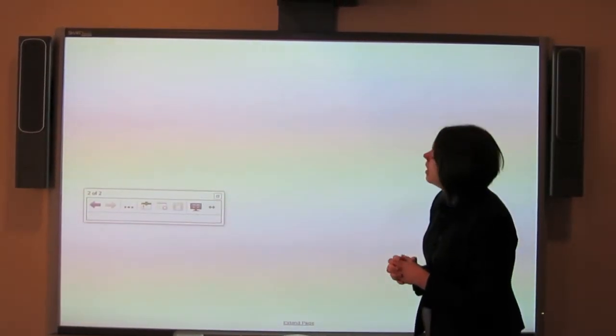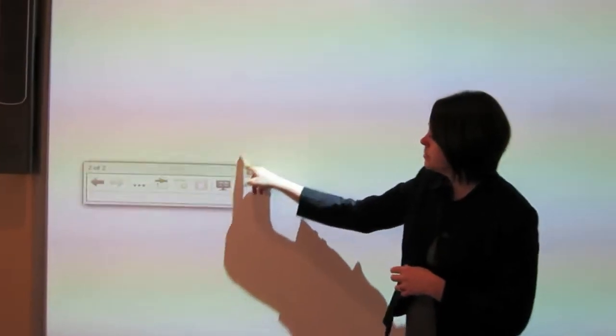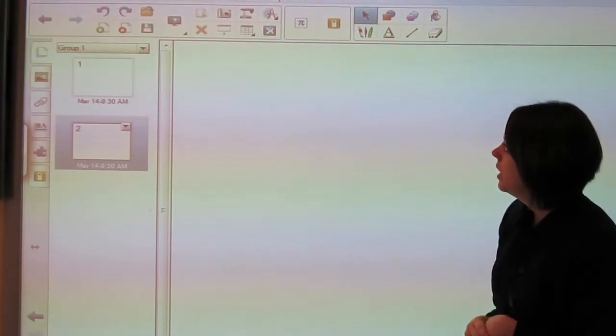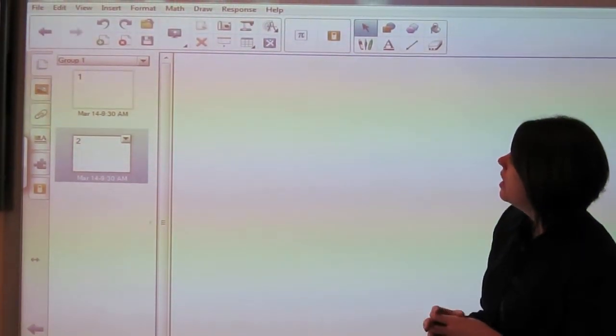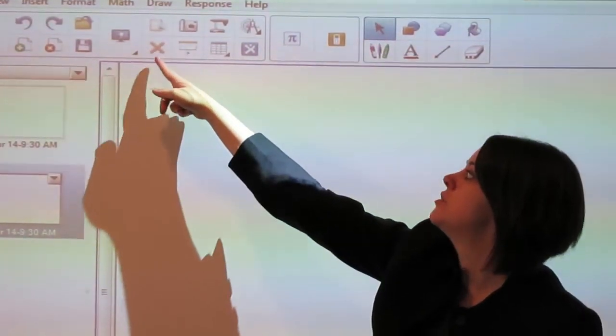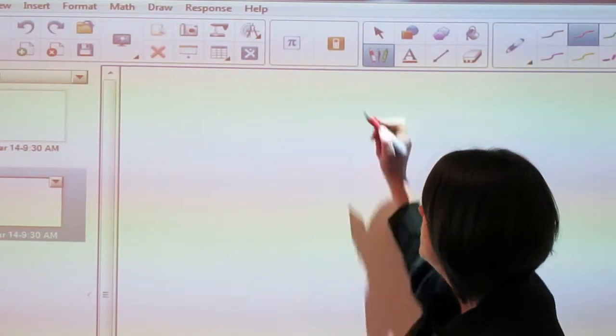To exit out of full screen, you just close out of this box right here and that'll bring you back to the regular view. Another very popular one is called the Screen Shade. The Screen Shade is two over from the full screen.